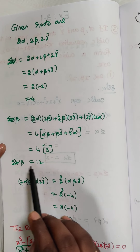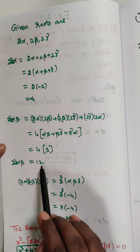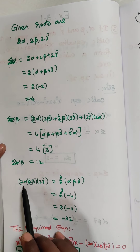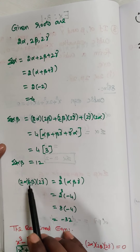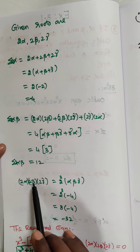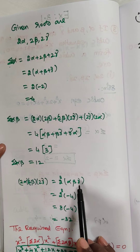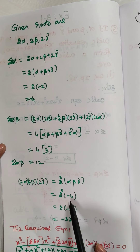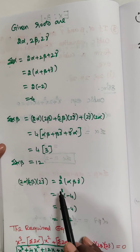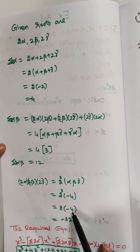Next, 2α·2β·2γ equals 2³ × αβγ. We already know αβγ equals minus 4. So 2³ = 8, and 8 × (−4) equals minus 32.